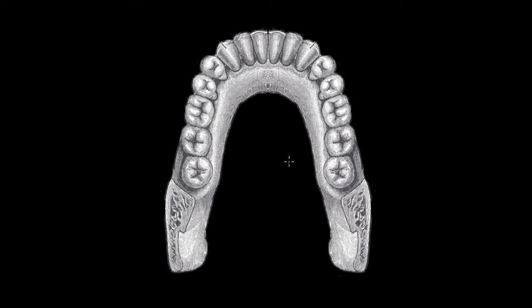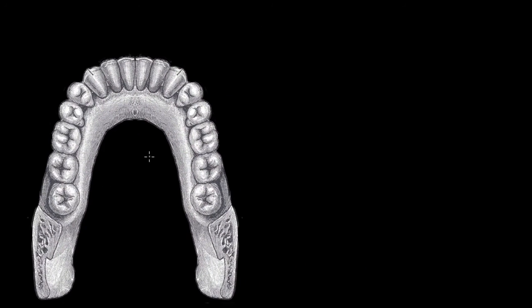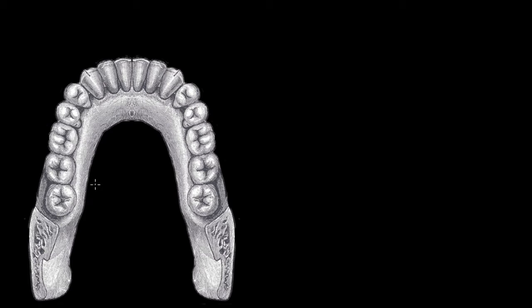Now that we've talked about the mouth in general, let's put a smile on that face and take a look at the teeth in a little more depth. What we have here is an image of the lower jaw, and another term for the lower jaw is the mandible. This is your mandible right here, and this is your left side of the mandible, and this is your right side, so you can follow along as we talk about your teeth.